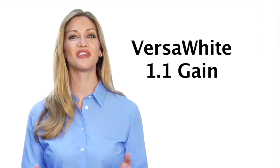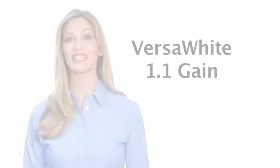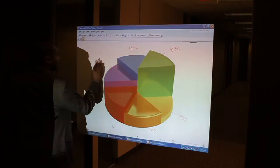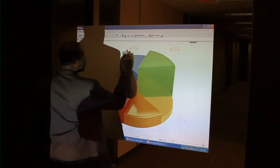The unique VersaWhite 1.1 gang material is coated with a scratch-resistant optical nanotech resin to enhance the durability as a long-term dry erase whiteboard.